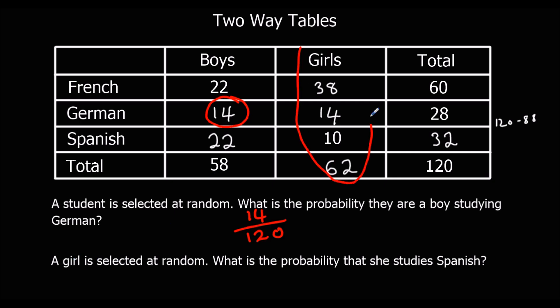A girl is selected at random — only the girls this time. What's the probability that she studies Spanish? It's 10 out of 62, because they've only selected from the girls.